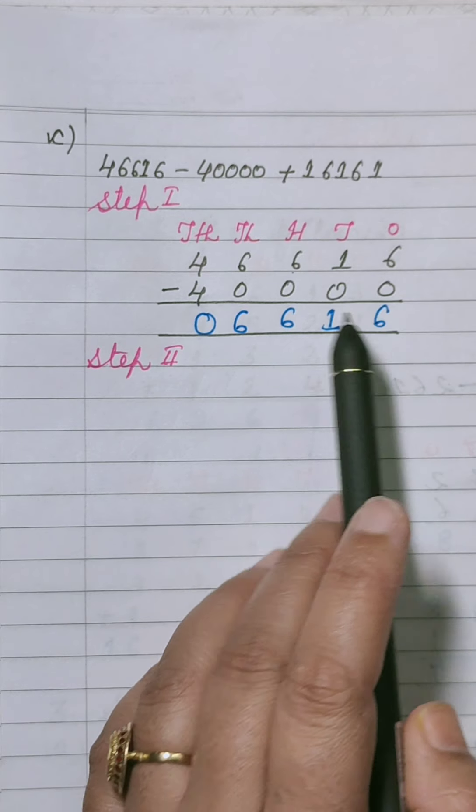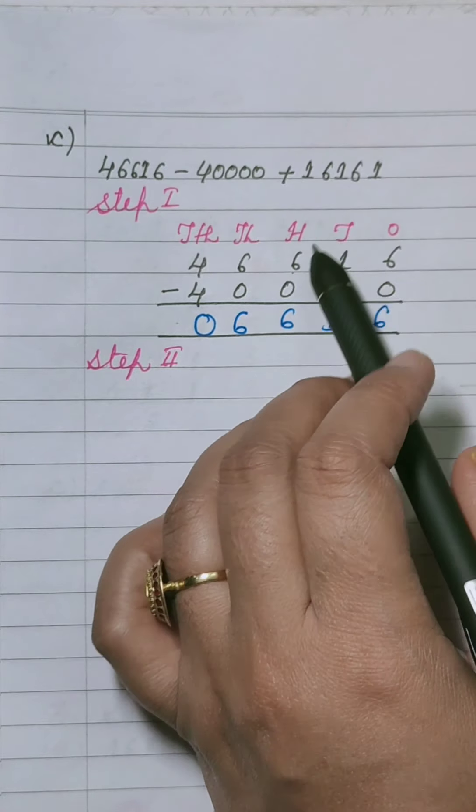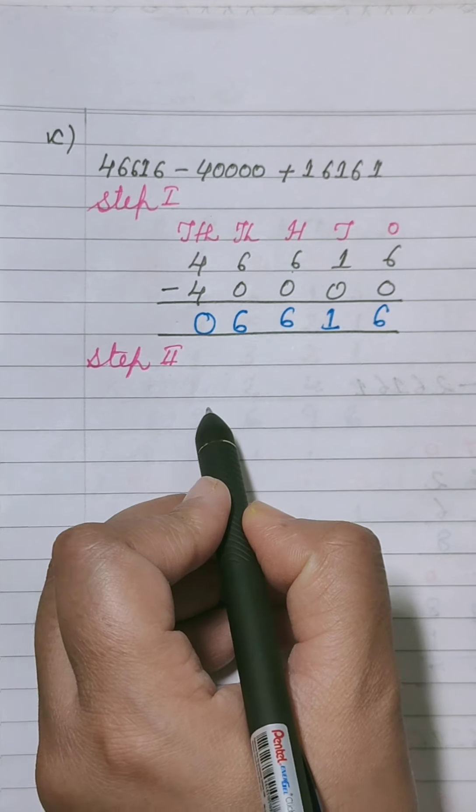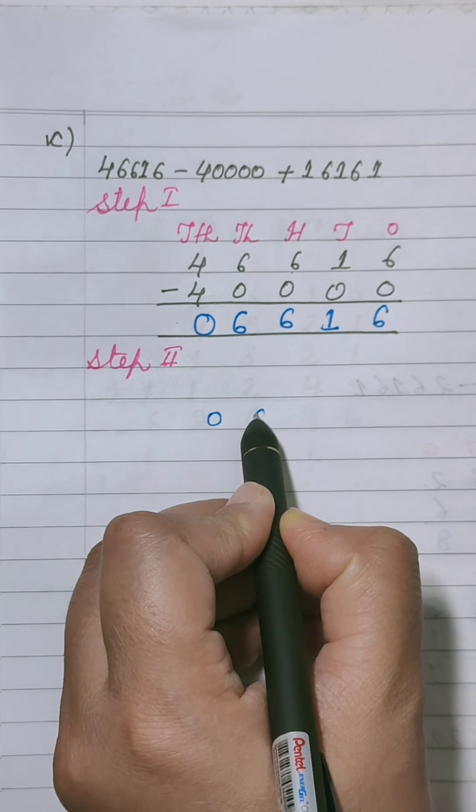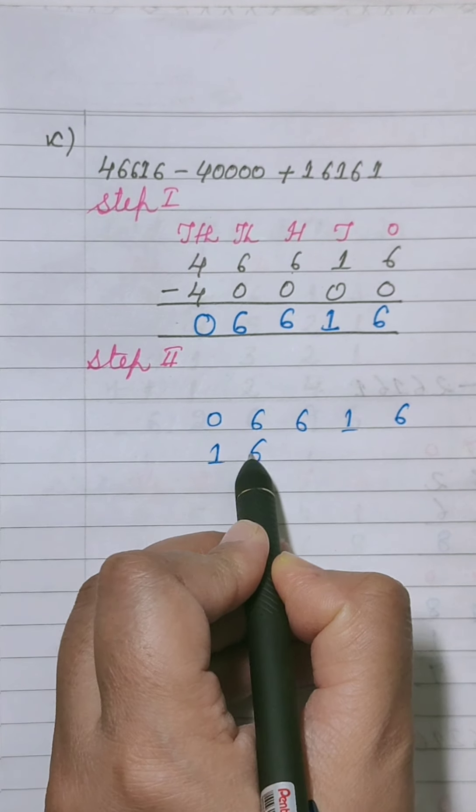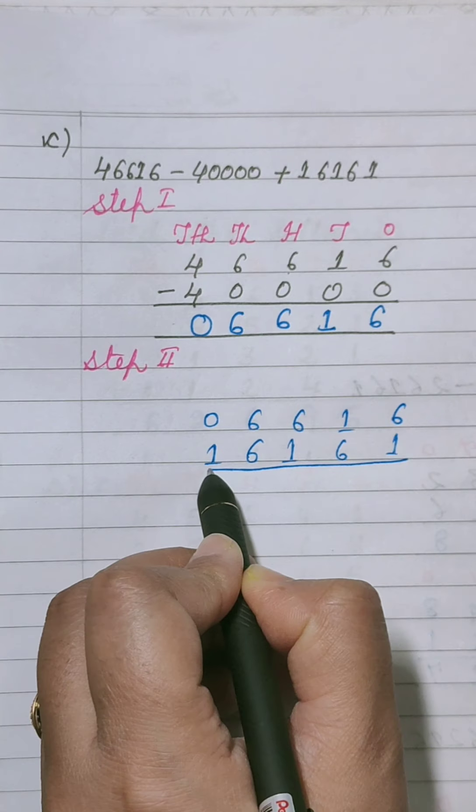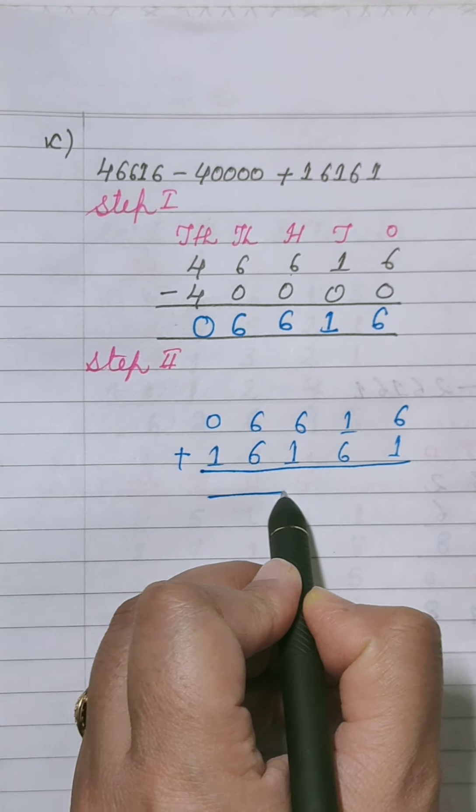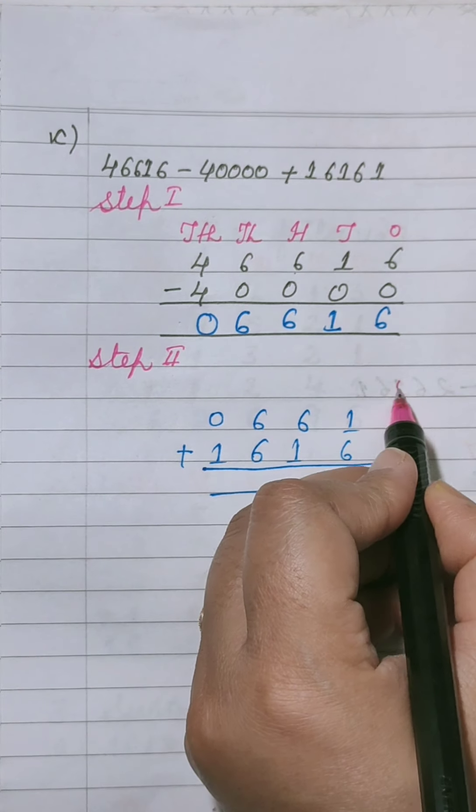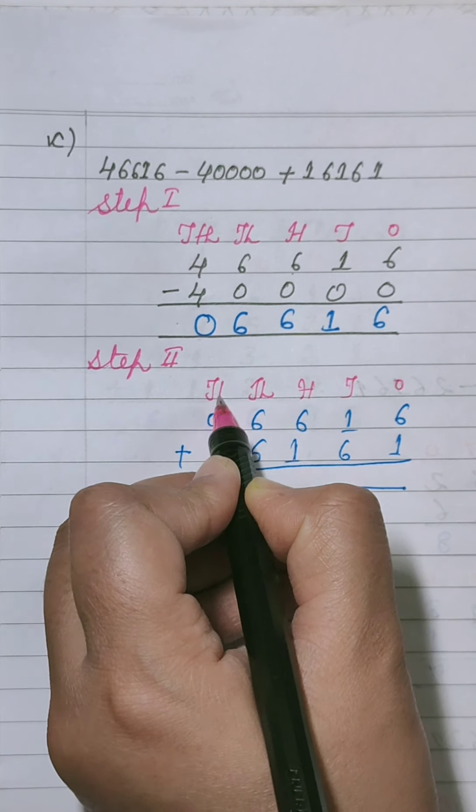Clear? Here यह यह जो अंसर है, यह जो अंसर है यह प्लस का ही है. Now we will add these two numbers. जो अंसर है उसमें third value को प्लस करेंगे. We will write it as 0, 6, 6, 1, 6, plus 1, 6, 1, 6, 1. First of all we will show its places: 1, 10, 100, 1000, and 10,000.